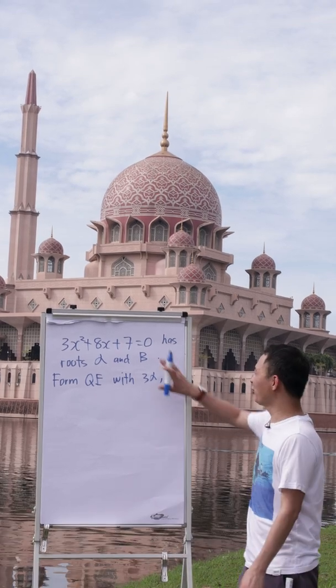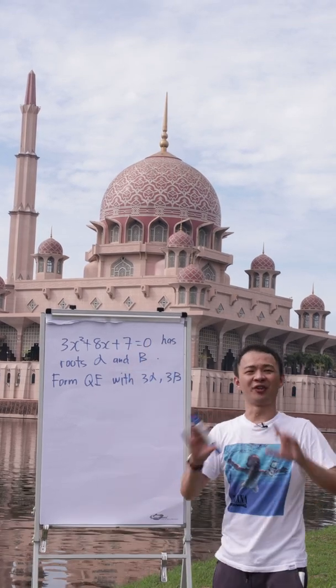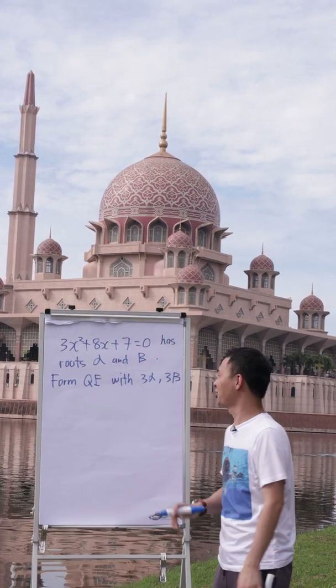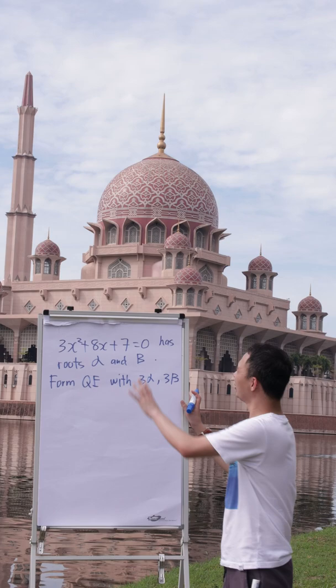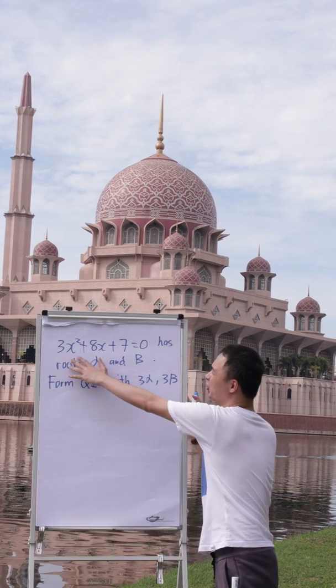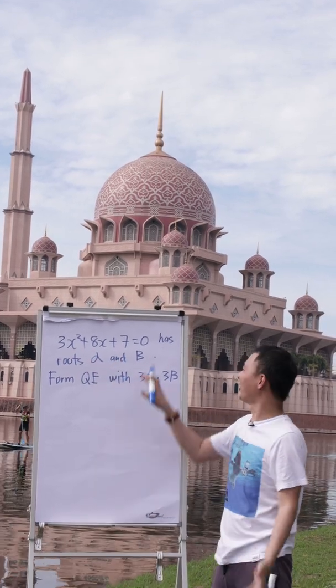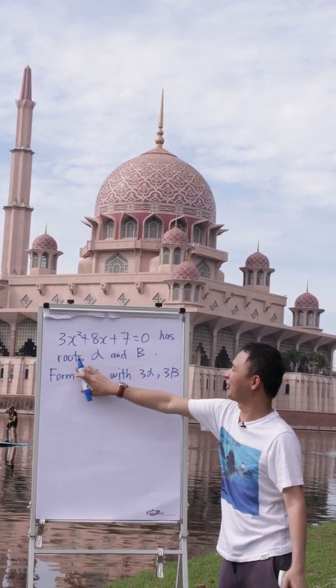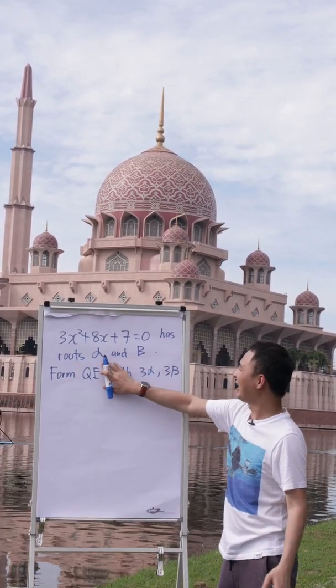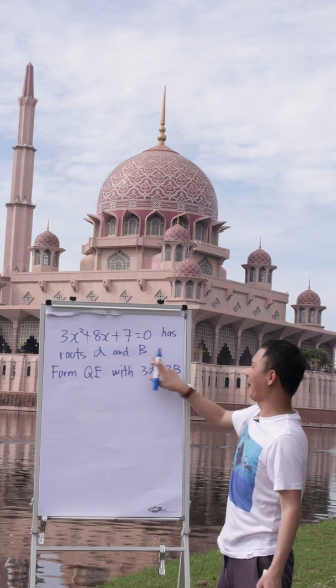Today I'm going to teach you how to solve this kind of quadratic equation questions. The question tells you 3x squared plus 8x plus 7 actually have the root alpha and beta.